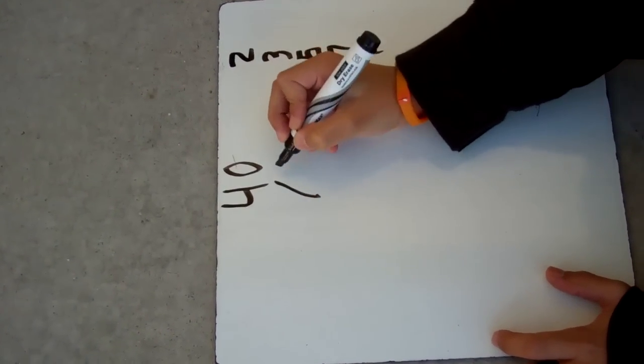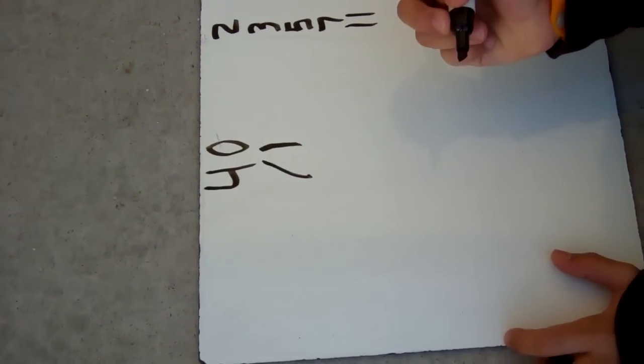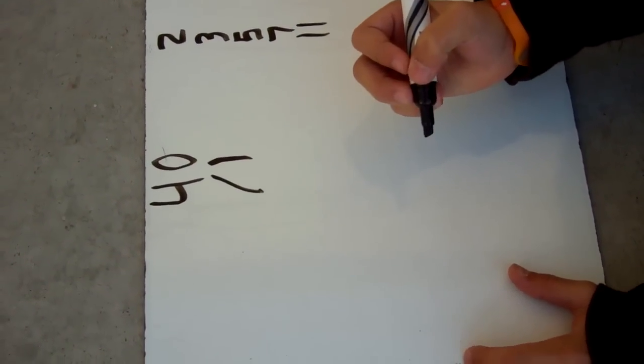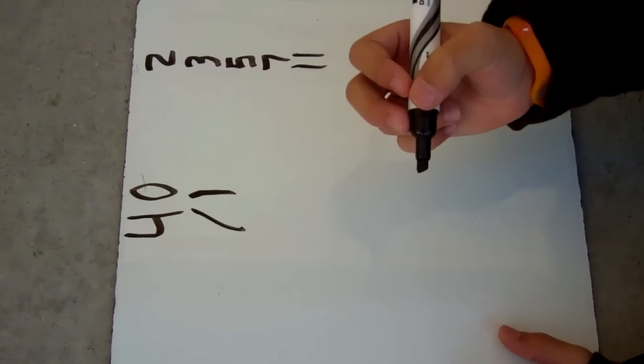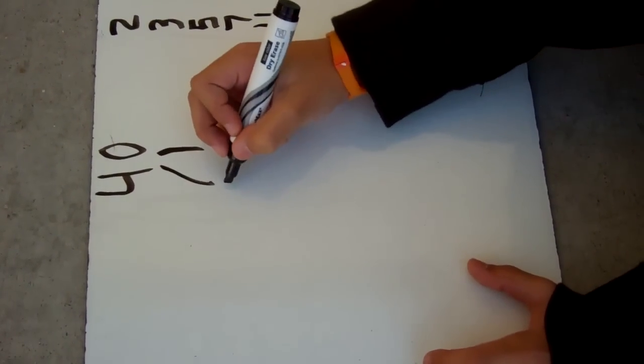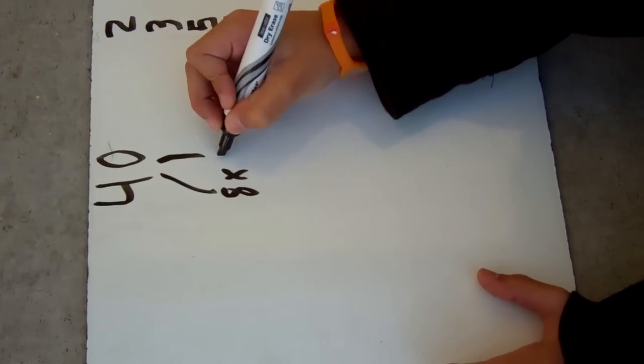Then we draw a branch, and we think what equals 40? We could do either 10 times 4 or 8 times 5. I'll go with 8 times 5.